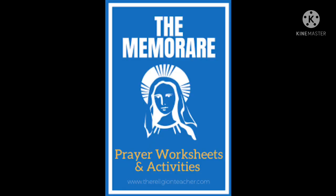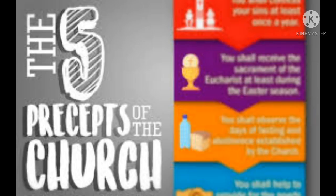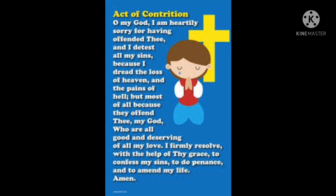Then comes the Memorare, that's nine. And number ten is the Ten Commandments. Then eleven is the precepts of the church. Then the seven sacraments. Then the act of contrition.